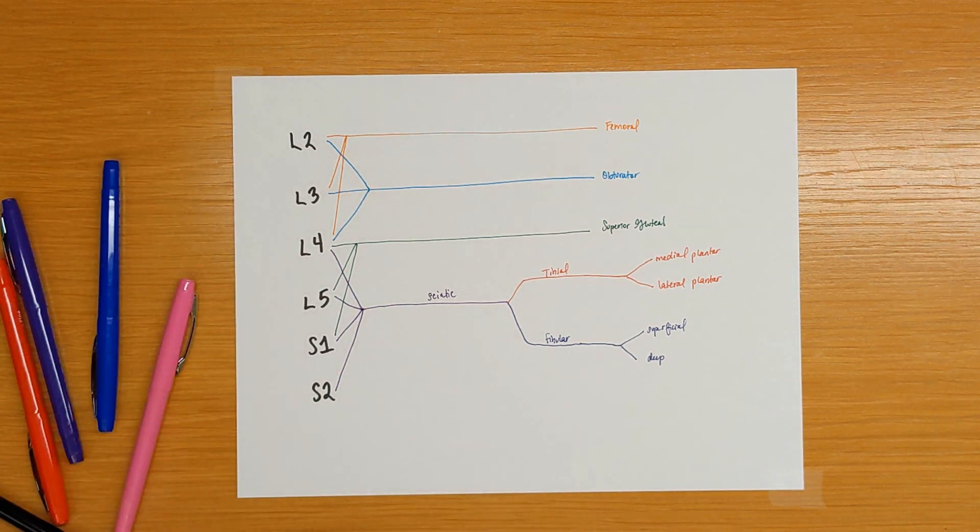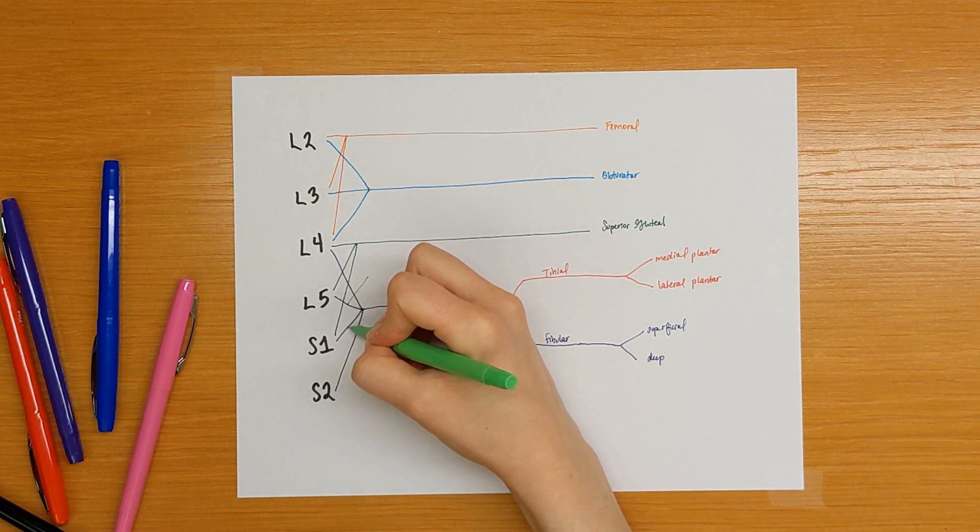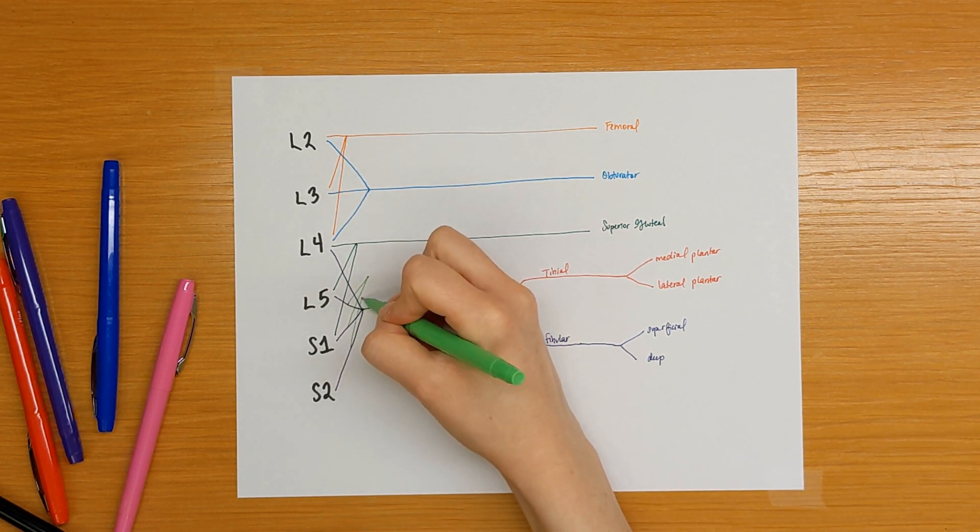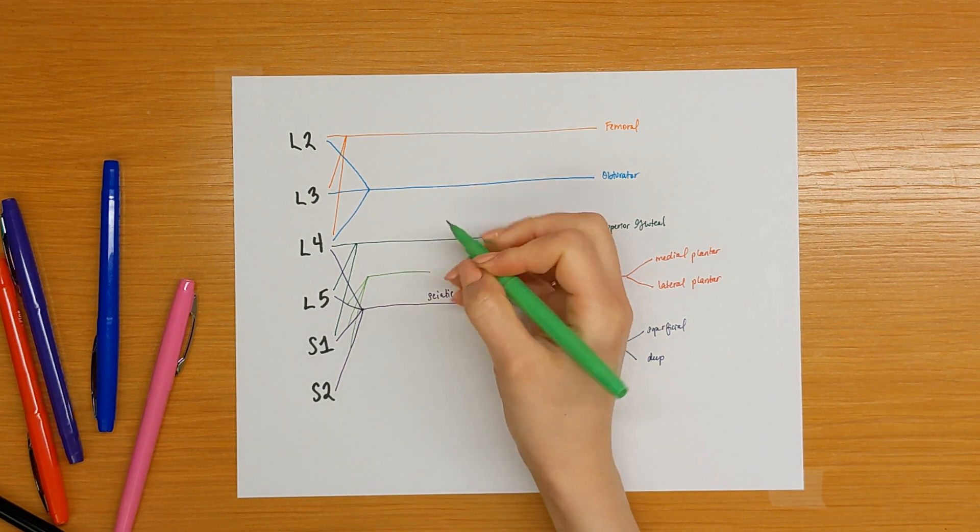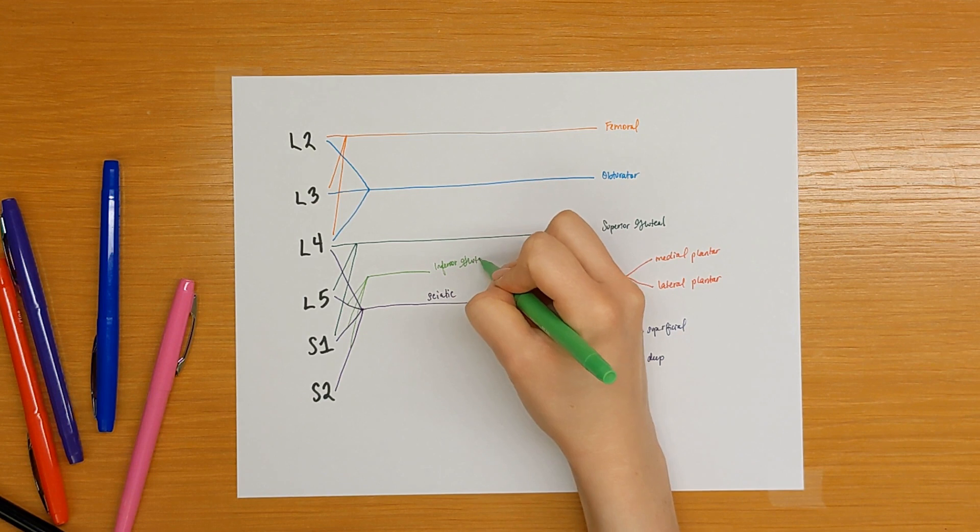We'll also add in L5, S1, and S2. This is our inferior gluteal nerve.